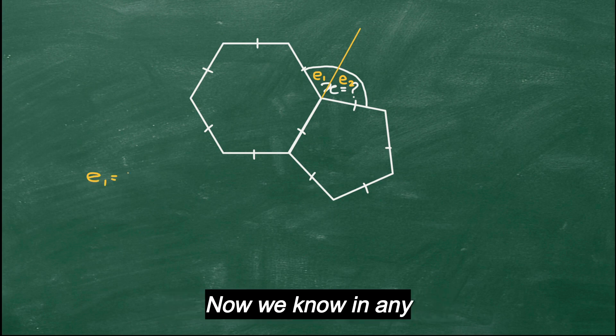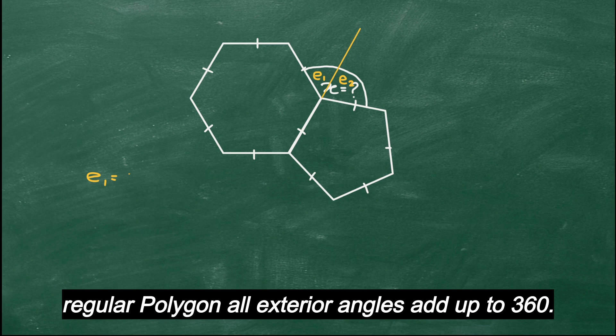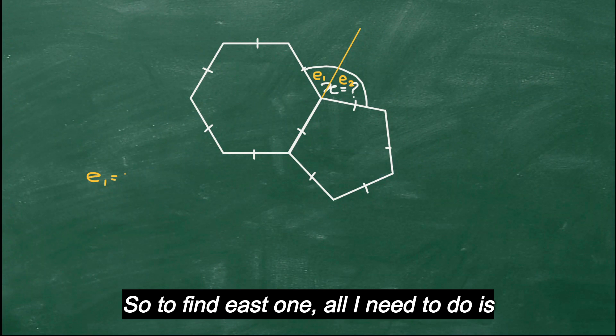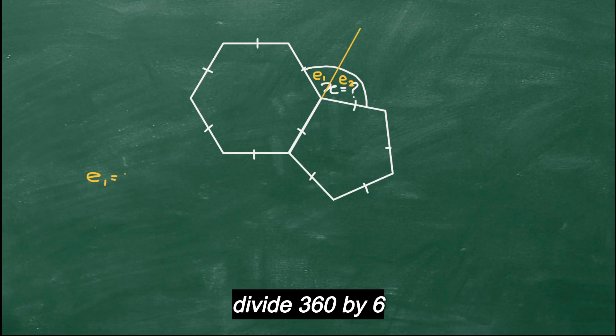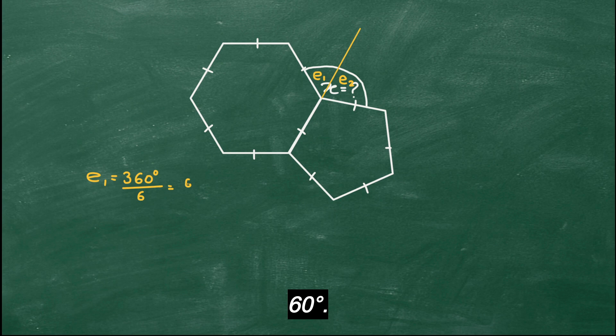Now we know in any regular polygon, all exterior angles add up to 360. So to find e1, all I need to do is divide 360 by 6, which gives you 60 degrees.